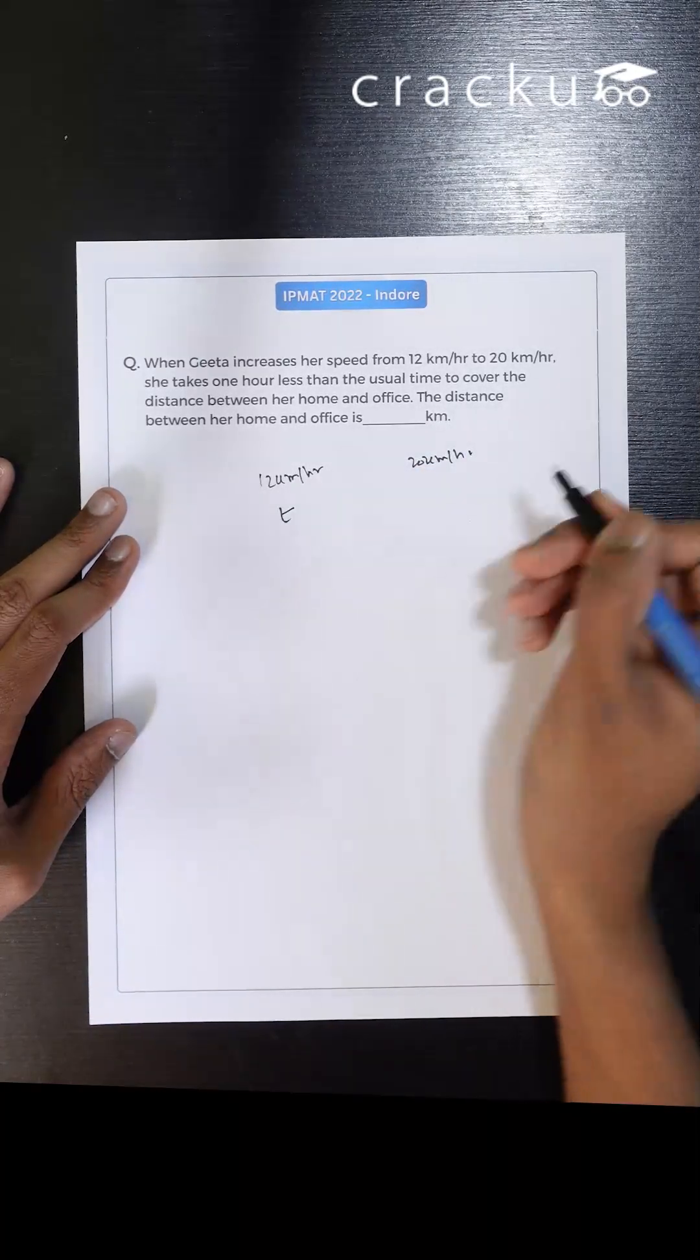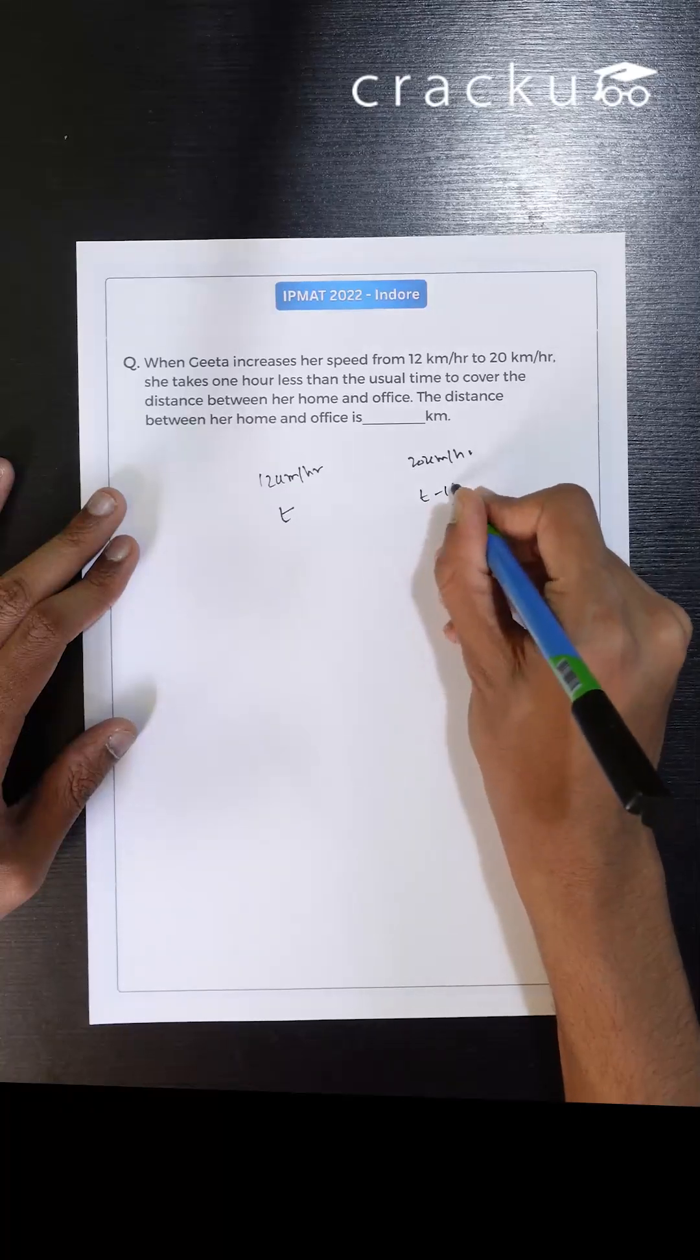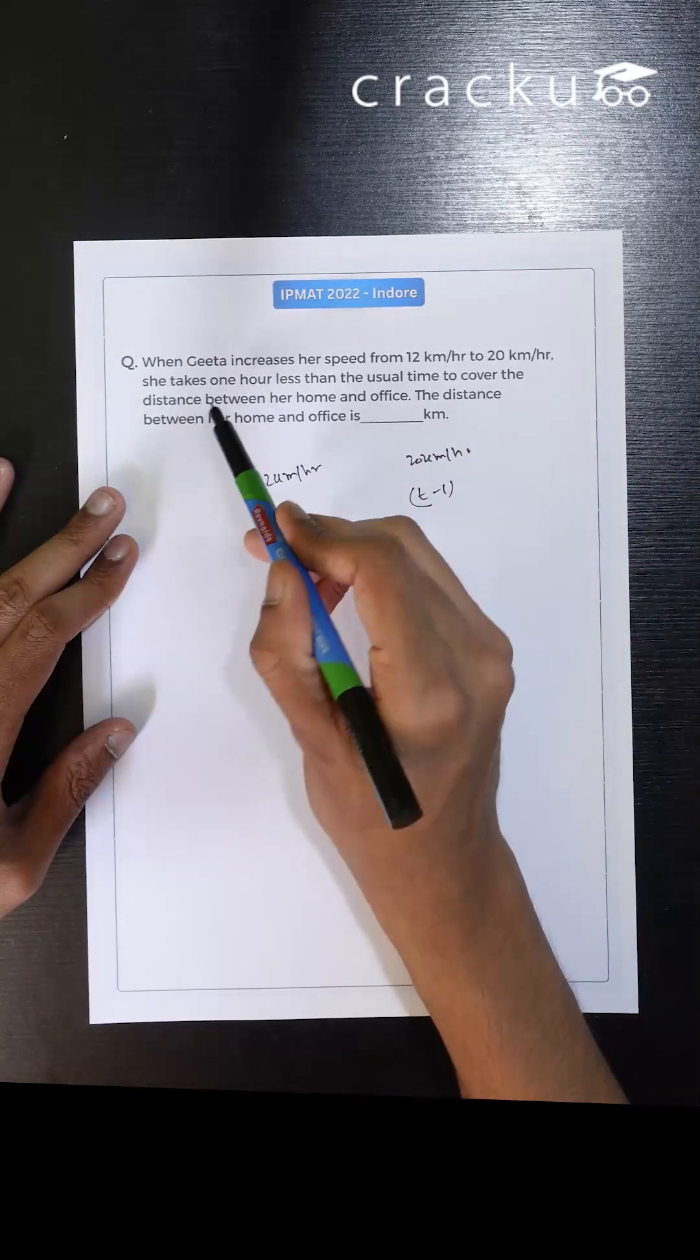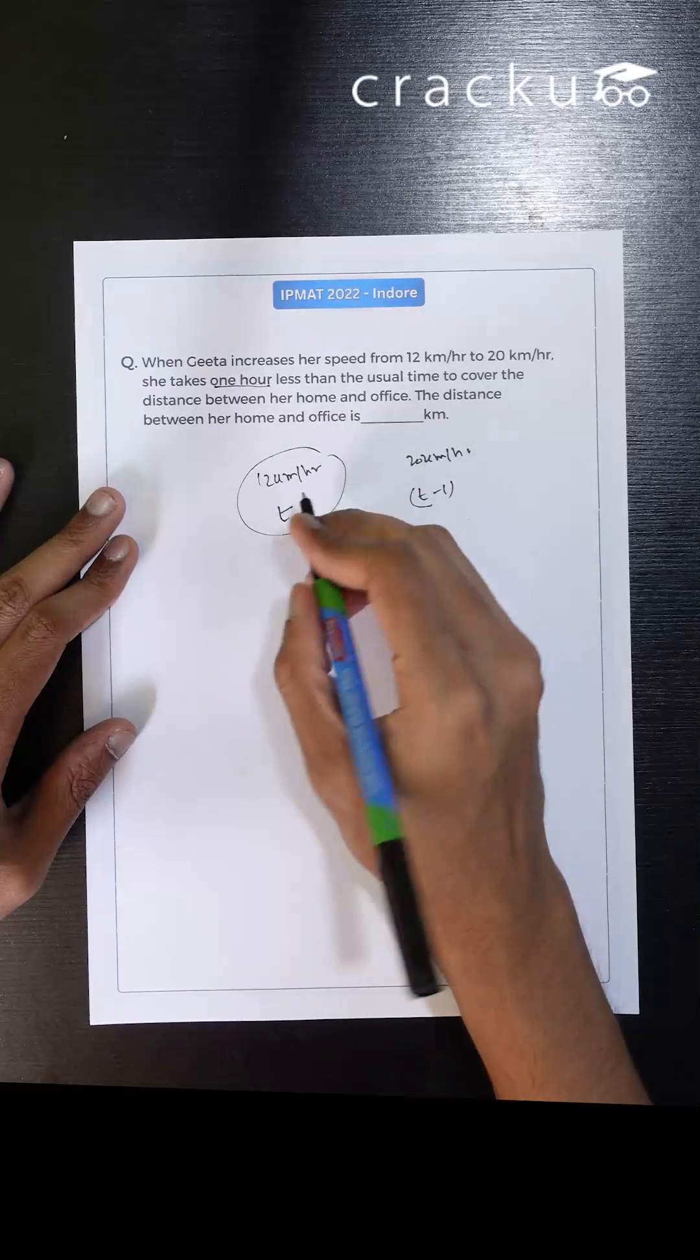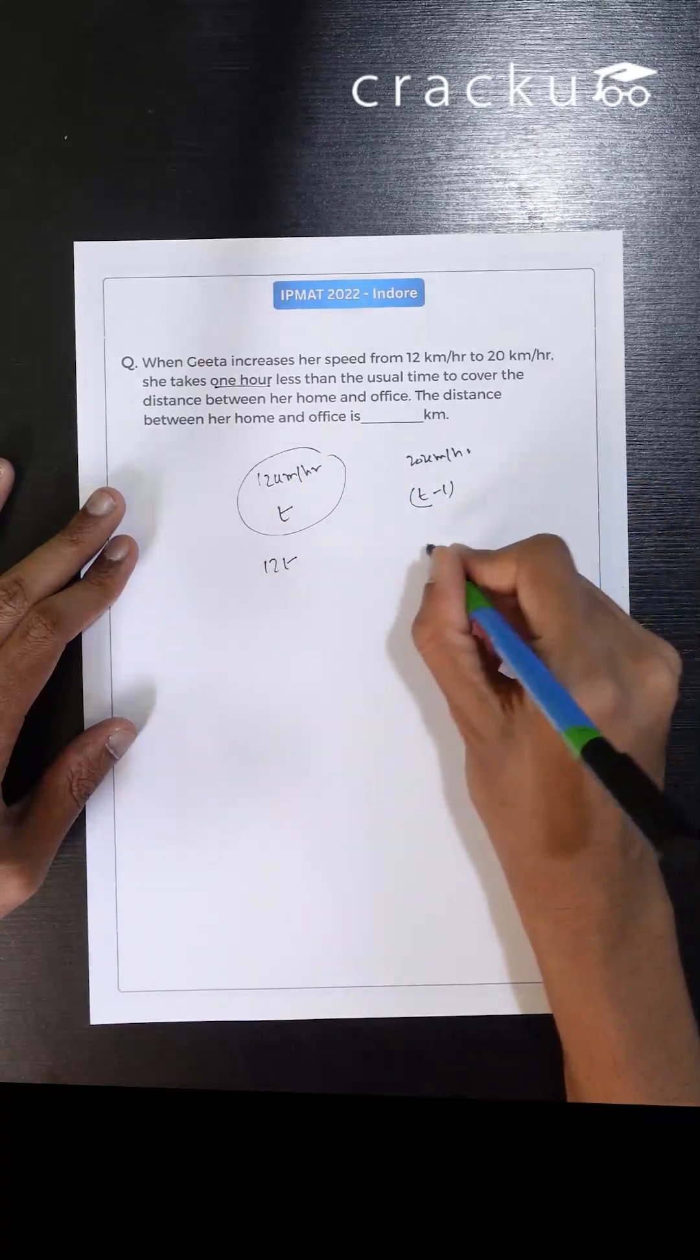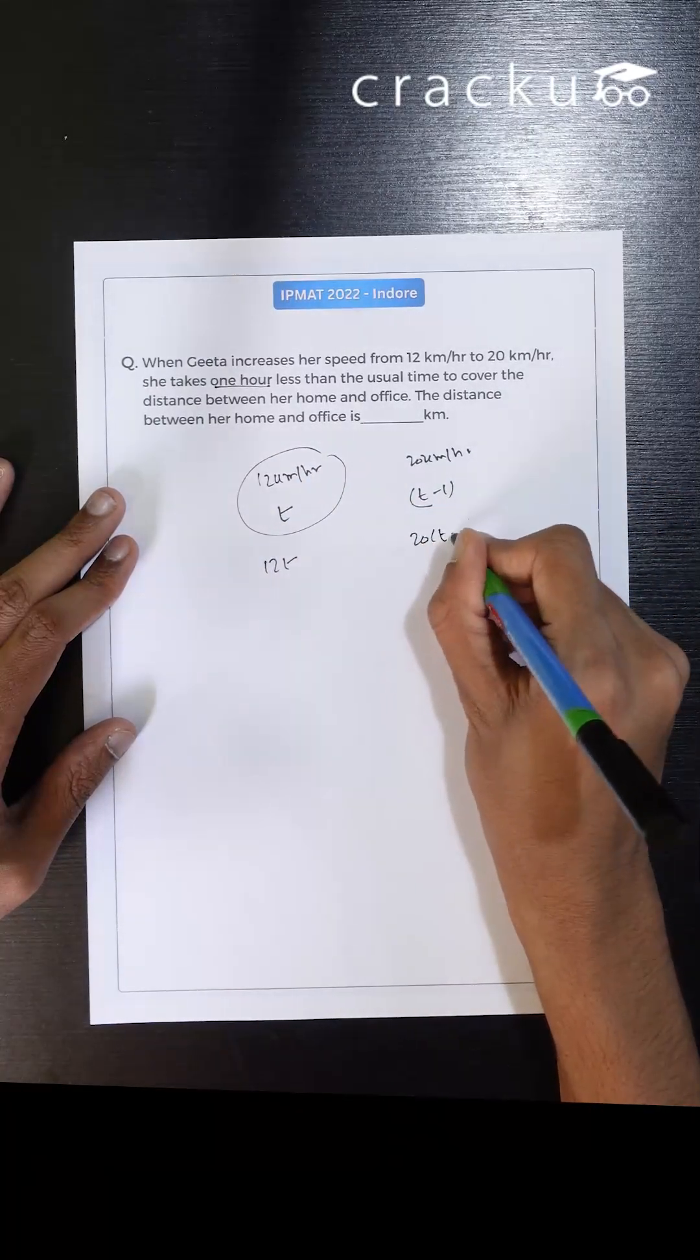Let's say the time taken here is t. The time taken here will be t minus 1 hours because it is given one hour less. So I can write the distance covered here is 12t, and the distance covered here is 20 into t minus 1.